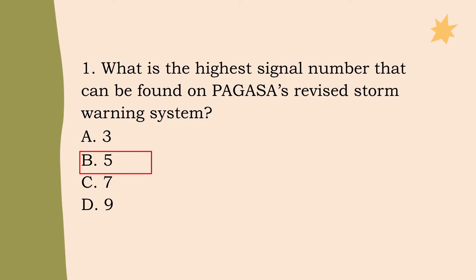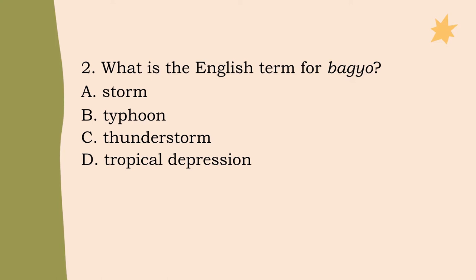Number 2: What is the English term for bagyo? Letter A: storm, Letter B: typhoon, Letter C: thunderstorm, or Letter D: tropical depression? The correct answer is Letter B, typhoon.